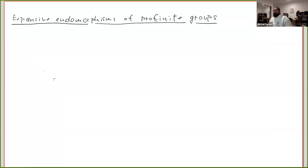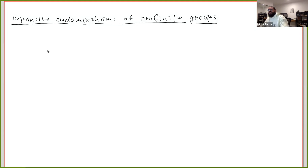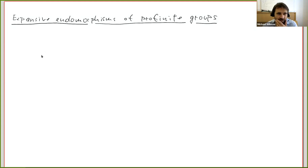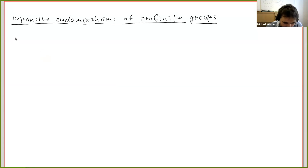Welcome back. This is the second talk of today, also given by Michael Wibmer from Technical University in Graz, Austria. It will also be on the theme of algebraic difference groups. Michael will talk about expansive endomorphisms of profinite groups. Thanks again for having me. This second talk is closely connected to the first block, so I assume everyone saw the first talk.